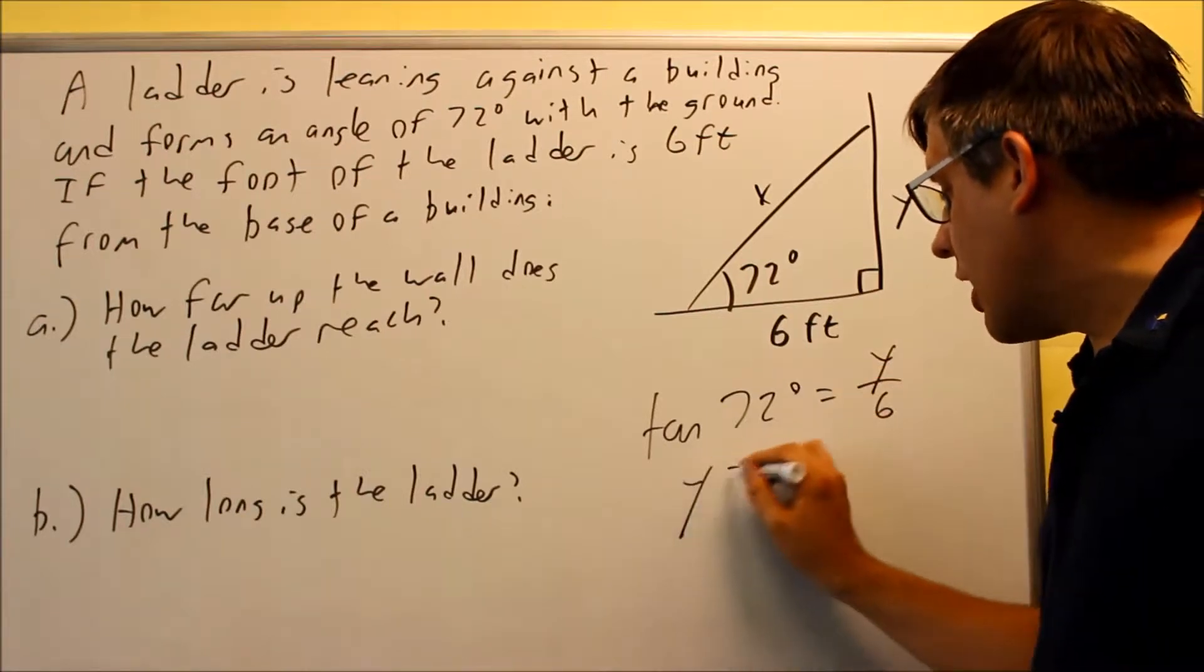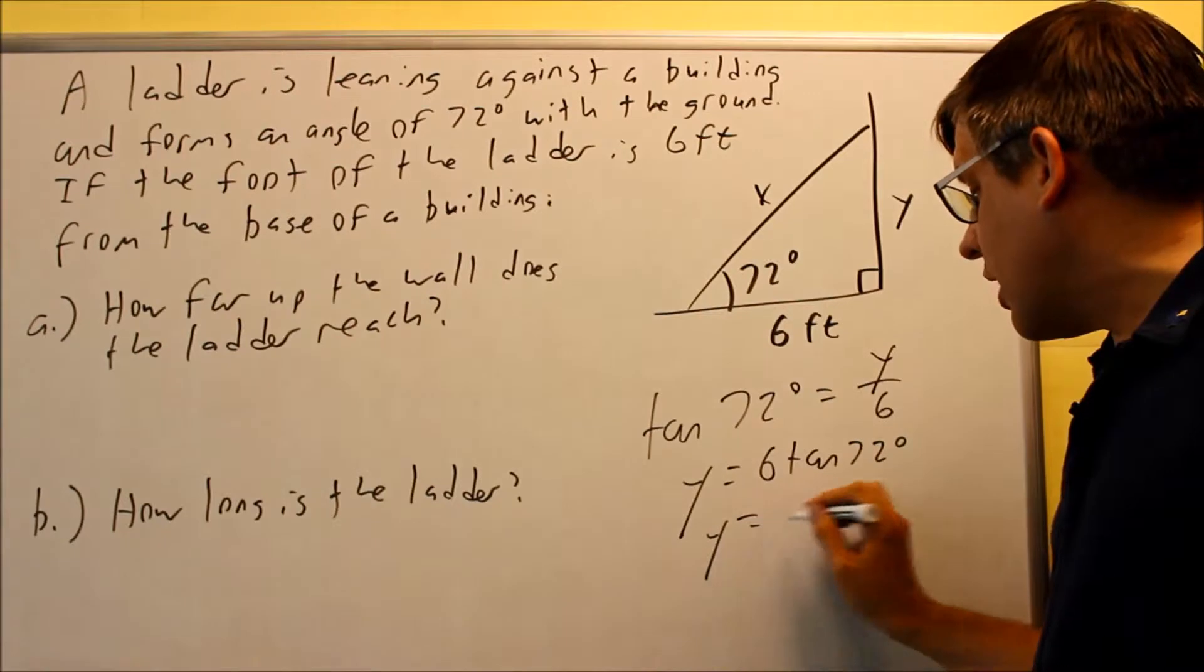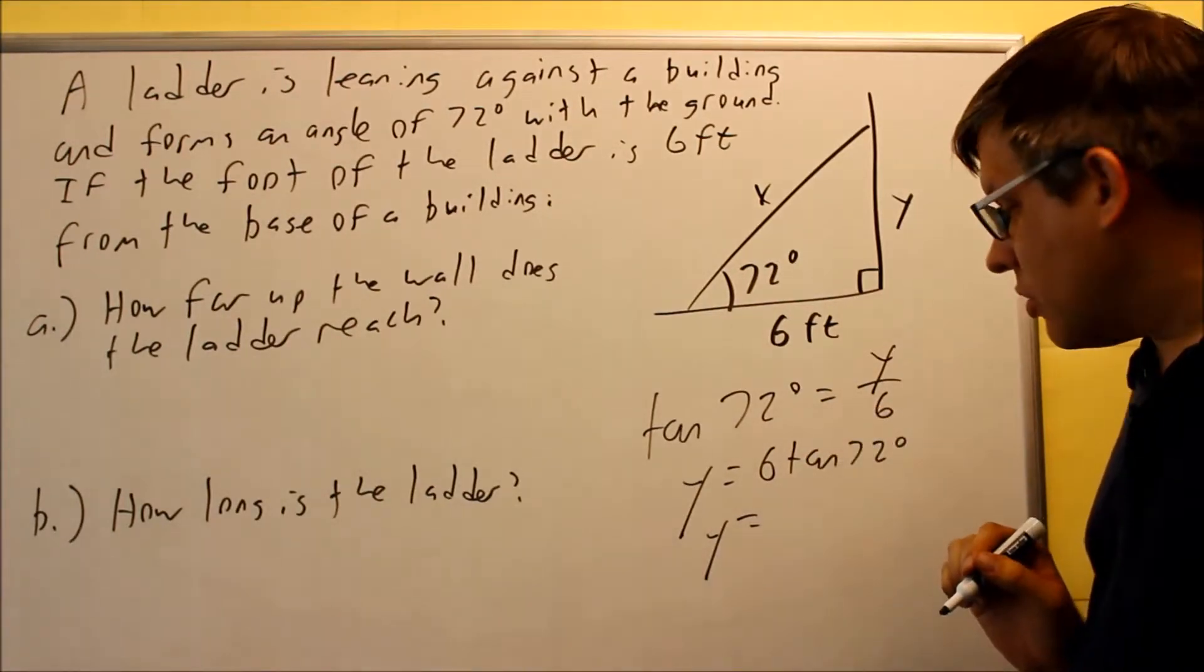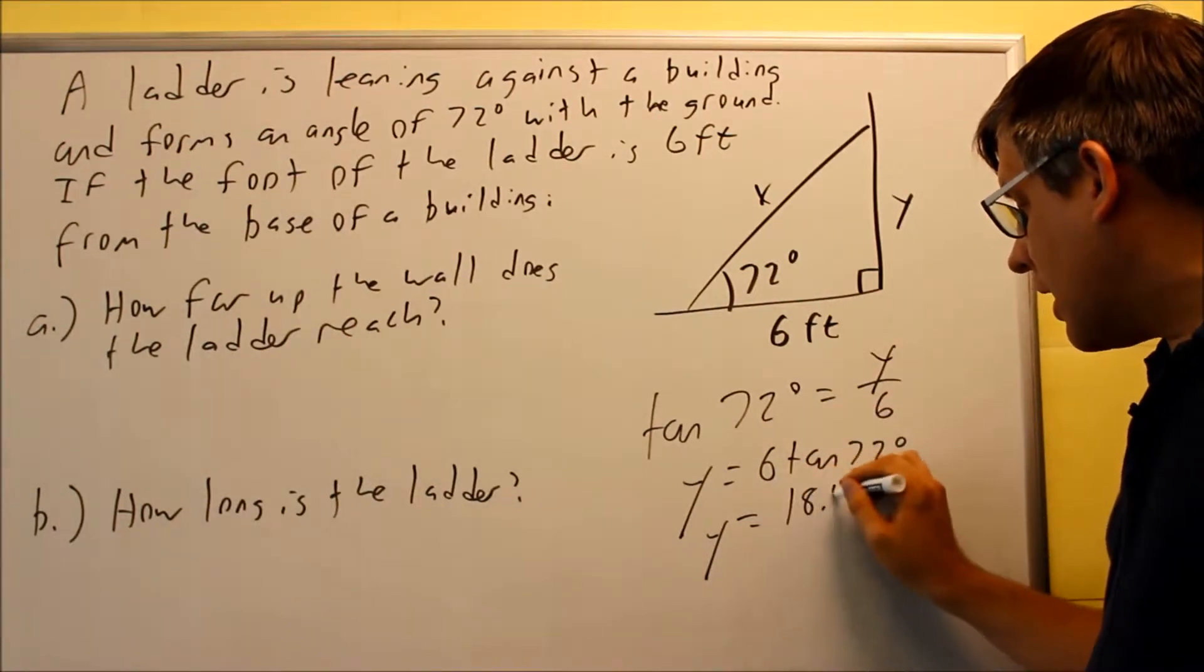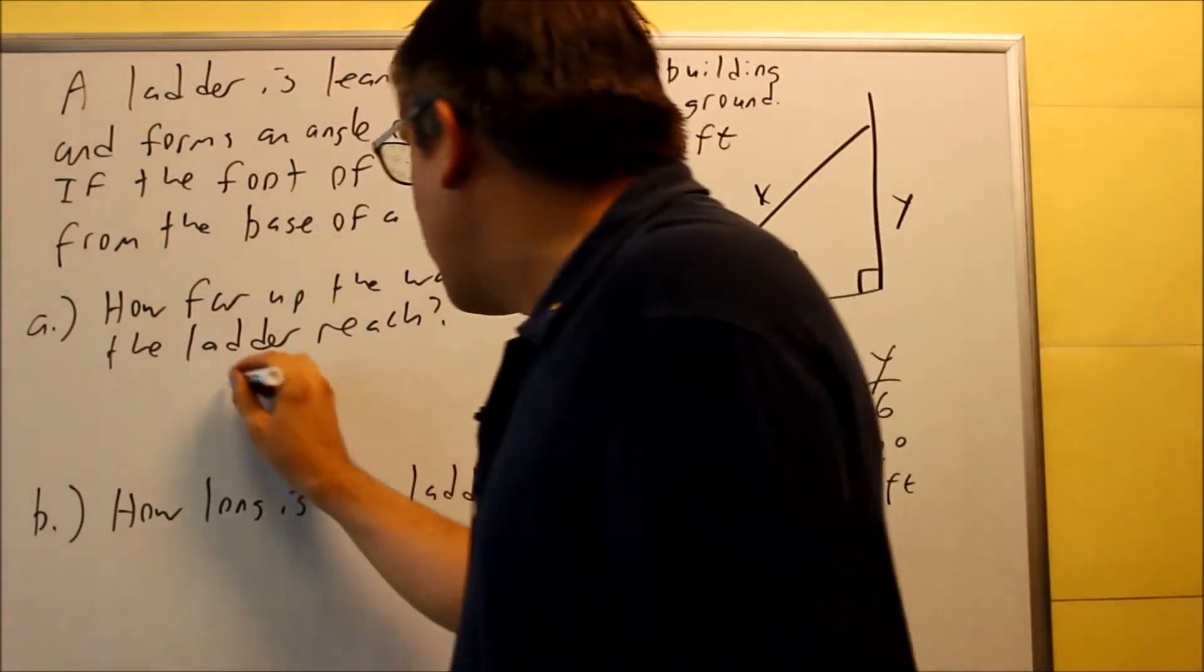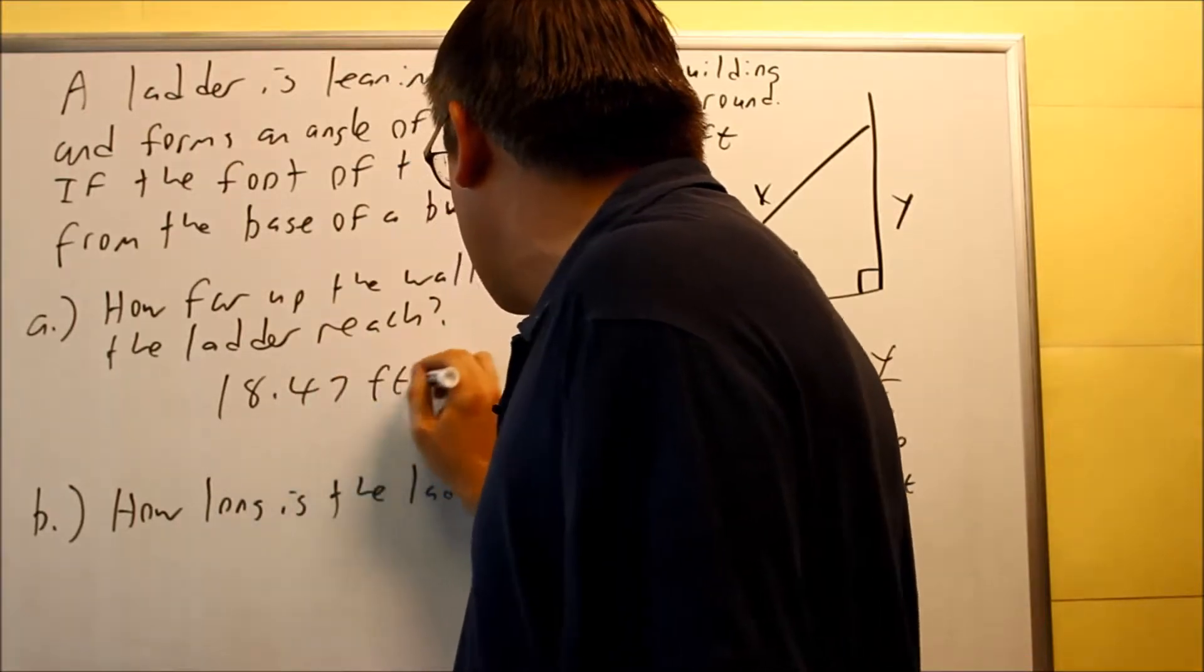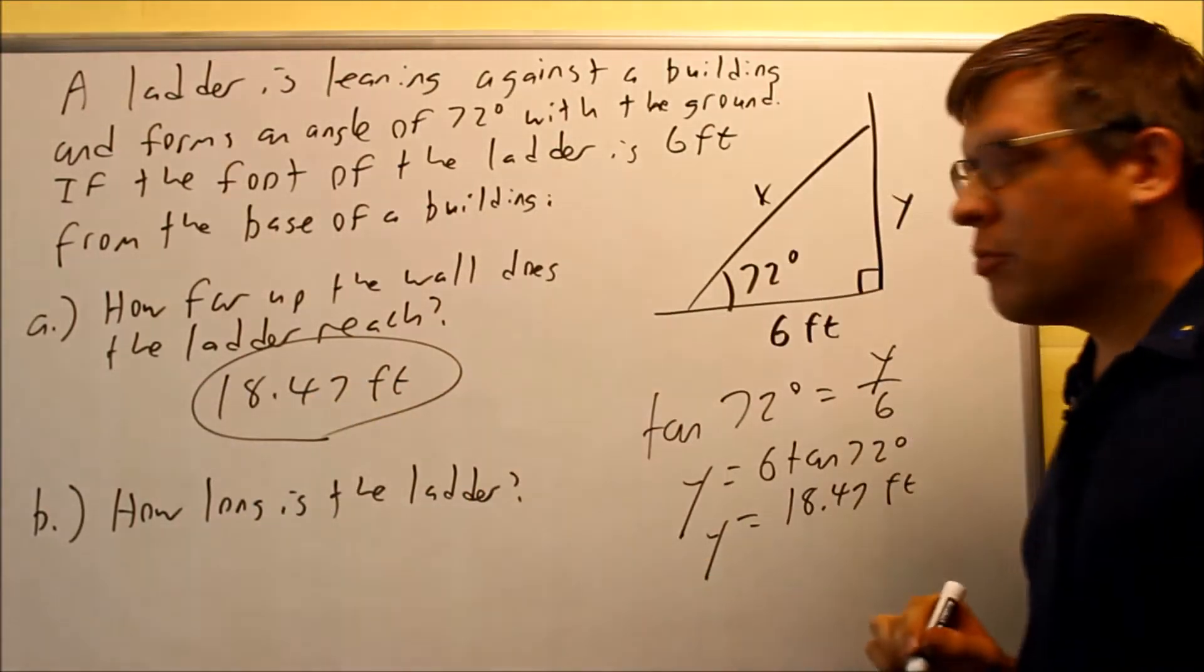If I cross multiply, I get Y equals six tangent 72, and I want to put that into my calculator. And when I do, I get 18.47 feet. So how far up the wall does the ladder reach? 18.47 feet. That would be the answer for part A.